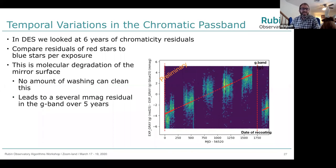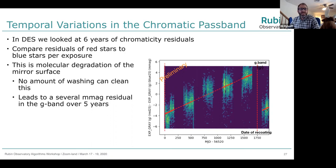There are other temporal variations. In DES, we looked at six years of chromaticity residuals — comparing red stars to blue stars per exposure. In the G band, we see a steady chromatic term from year to year, then we recoated the mirror and it drops back down. This is molecular degradation of the mirror surface — no amount of washing will clean it off. This goes in as a smooth component in the model, which helps correct the G band chromatic term.